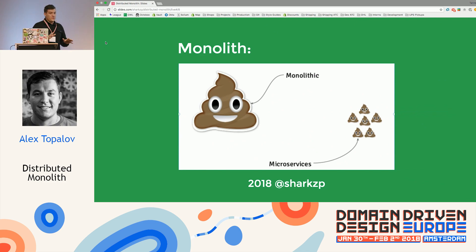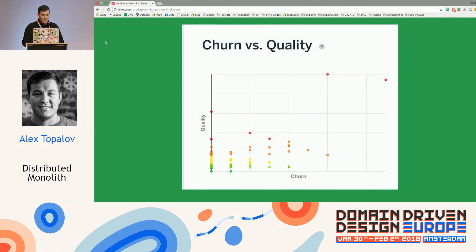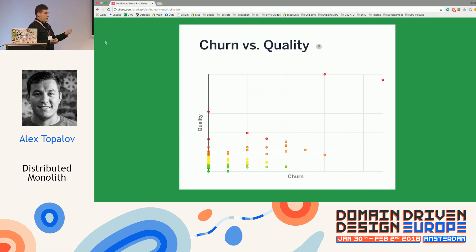With around 2,000 people working on the codebase, not a single person knows the application entirely from A to B. It's impossible to know what each and every team works on in detail. You can know the top-level overview, but you're not sure exactly whether everything works correctly or not.